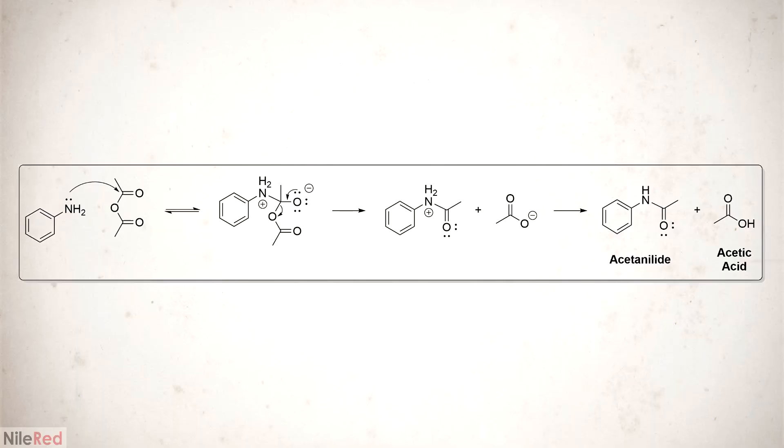In terms of the mechanism, it's not too complicated and it's just a couple steps. So the first thing that happens is a lone pair of electrons on the nitrogen of aniline attacks one of the carbonyls of acetic anhydride. The double bond of the carbonyl is opened and then immediately reformed and the carbon-oxygen single bond is broken. Then there's a proton transfer where the extra hydrogen on the nitrogen is given to the acetate ion. This leads to the formation of our final acetanilide as well as acetic acid as a side product.